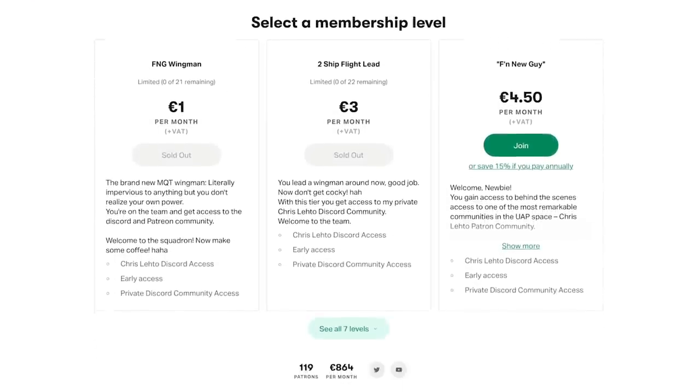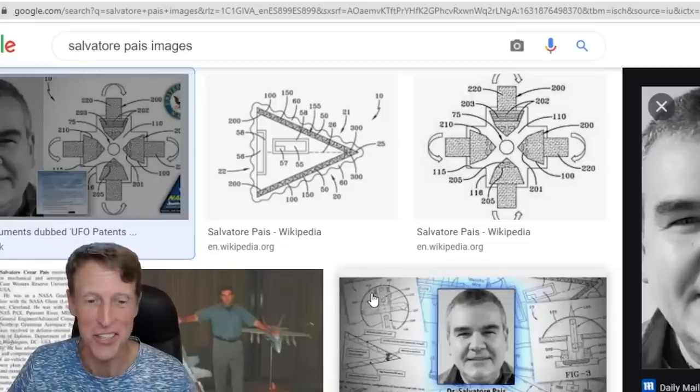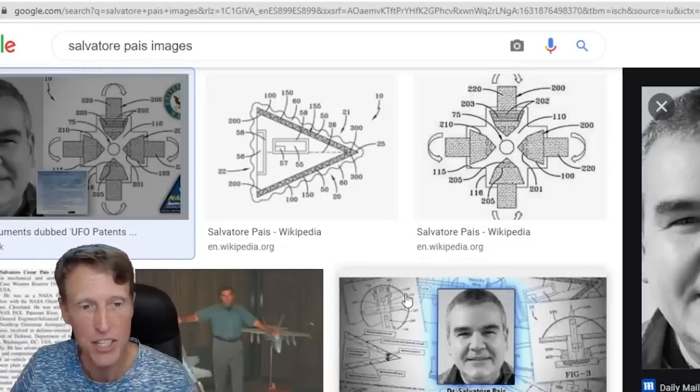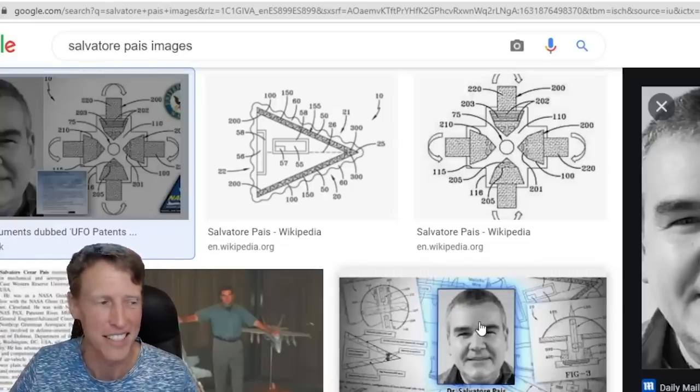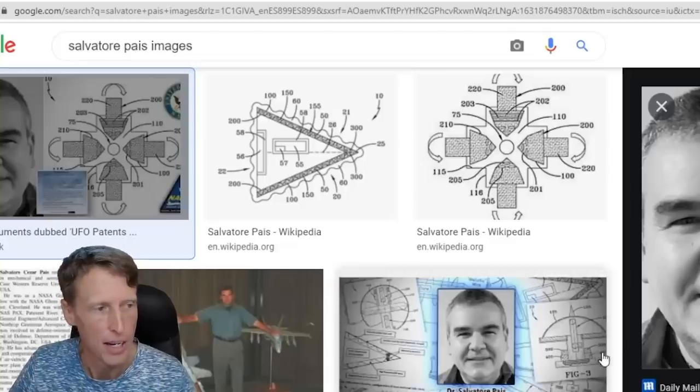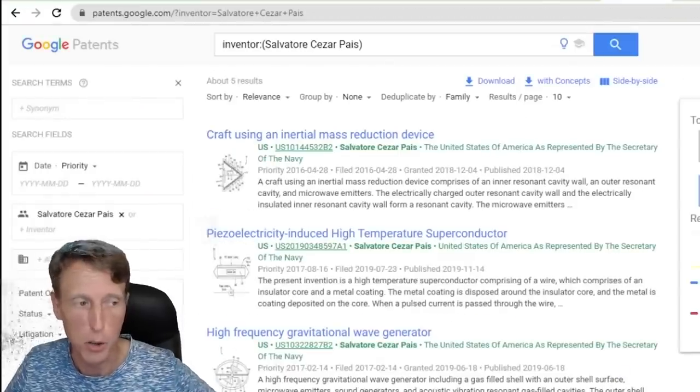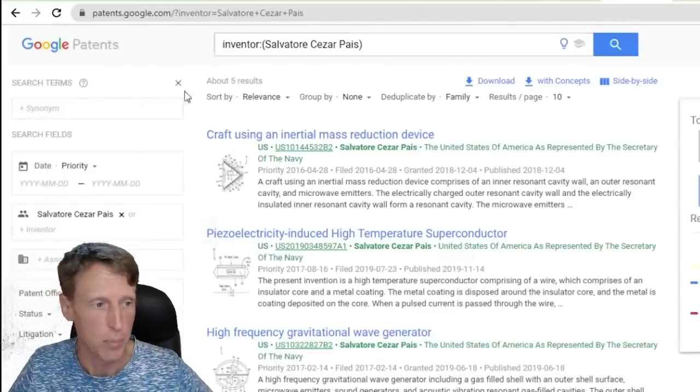Now on to the video. Salvatore Cesar Pais, or Pais as you would say it, that means nation in Spanish. Awesome stuff just came out. I just found out about this recently. He has three main patents. You can just Google Patents - Google Patents is an amazing program.